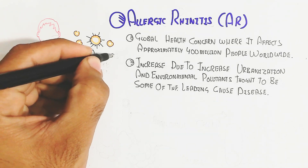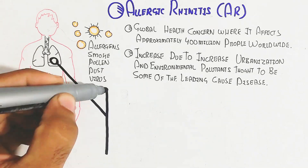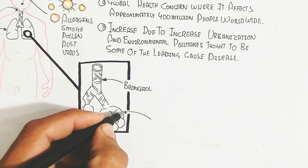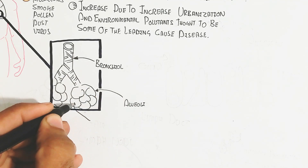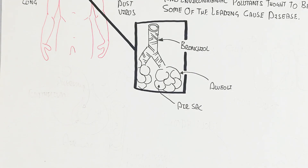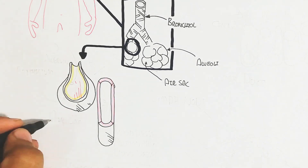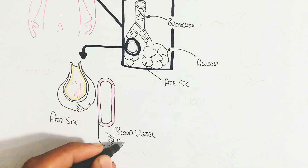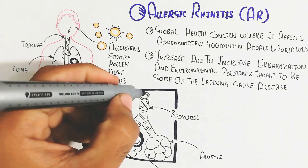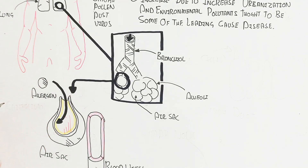The allergens can be smoke, pollen, dust, and viruses, inhaled during seasonal changes. In the respiratory system, the trachea branches into bronchioles and alveoli — the air sacs, which are the respiratory units. Here is the air sac alongside the pulmonary blood vessels. When allergens are inhaled, they can damage the epithelial cells and invade into the blood circulatory system.